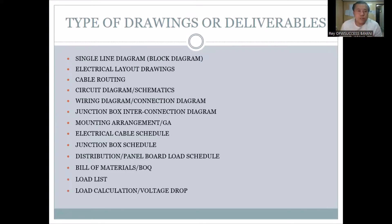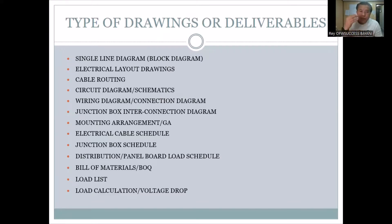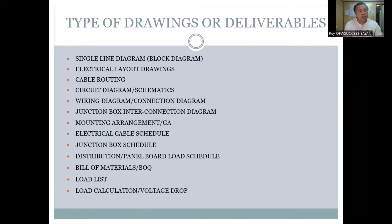These are the types of deliverables in our journey from feed engineering up to construction stage and also pre-commissioning and commissioning. When we say single line diagram, that is the primary key before everything else. You need the load from that. You'll know if all the protections you placed — circuit breakers, all of them — are calculated based on your load. Electrical layout drawings, cable routing — all of that — are basic requirements throughout our journey in construction, pre-comm, and commissioning.